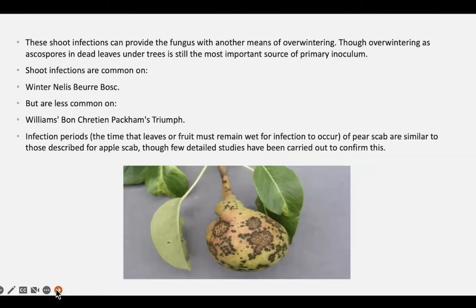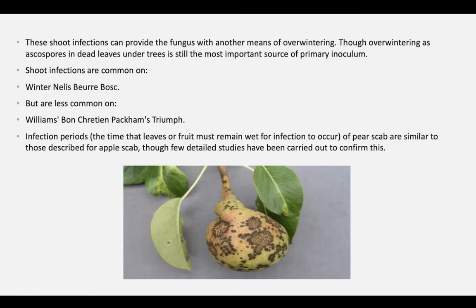Looking at this photo, you can see pear scab also on the stem of the pears — that's how they sit on the twigs. The pear stem is yellow so you can see it there, but on the shoot you can't see it as much. That's how they survive winter. Varieties like Beurre Bosc get it really bad as well. Williams is very susceptible for black spot, while Packham's Triumph is not so susceptible.